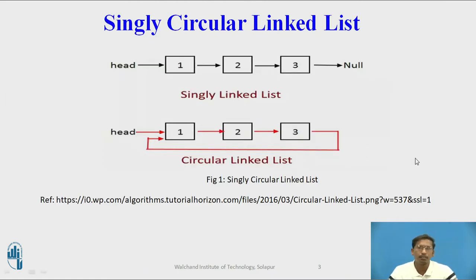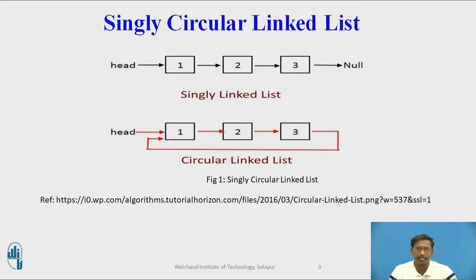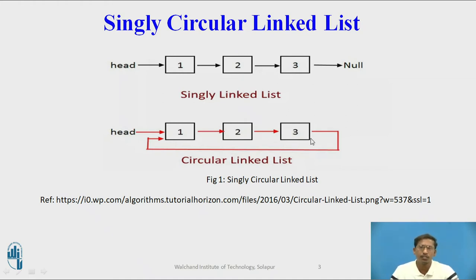Now, this is the difference between a singly linked list and a singly circular linked list. In a singly linked list, the last node's next part will have null to indicate this is the last node or end of the list. In a singly circular linked list, the last node's next pointer holds the address of the start or first node. That makes it circular.